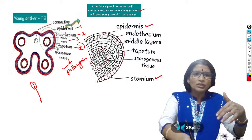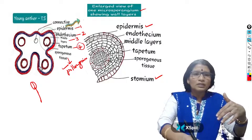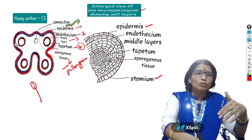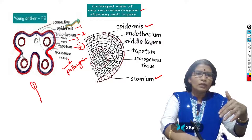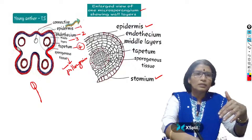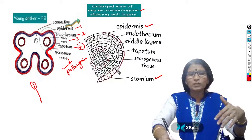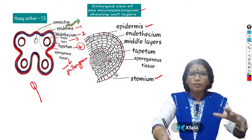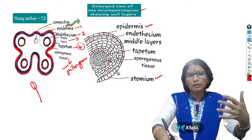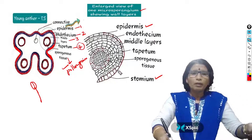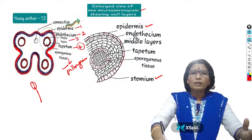One more thing about the stomium: it is present exactly between two pollen sacs. The stomium cells are present in that region — between two pollen sacs. The remaining epidermal cells are normal, but stomium cells are somewhat larger and made up of thin cell walls, and they can lose water at the time of anther dehiscence. Below the epidermis, endothecium cells are present.